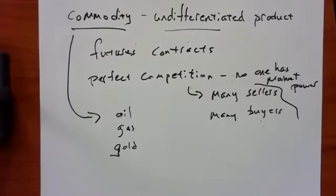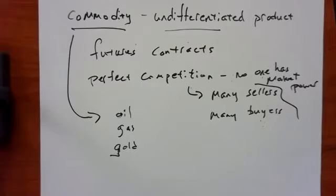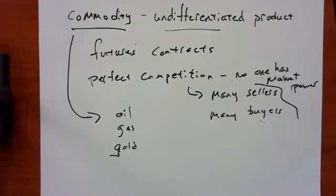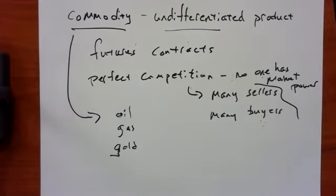The movie Trading Places with Eddie Murphy illustrates this. Eddie Murphy plays a homeless person, and two brothers who run a commodities trading firm make a bet that they can teach anyone to be a successful commodity trader. They pick Eddie Murphy off the street and turn him into a commodities trader — shenanigans ensue. It's a cute movie. There's one scene where they sit Eddie Murphy down at a table and bring out commodities to explain their business.